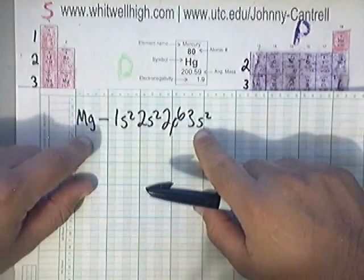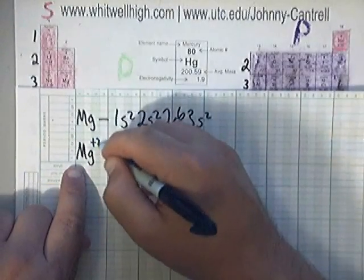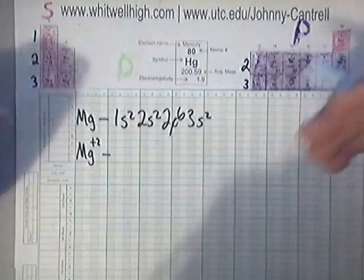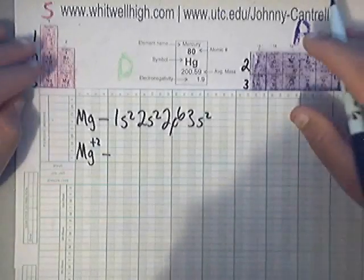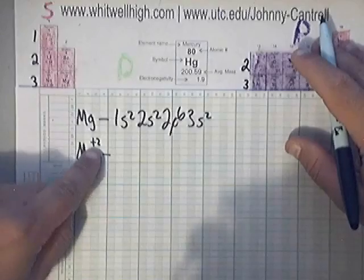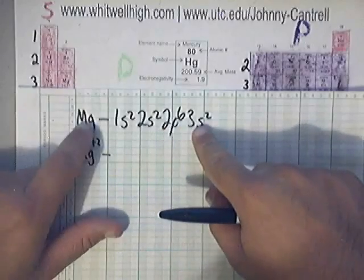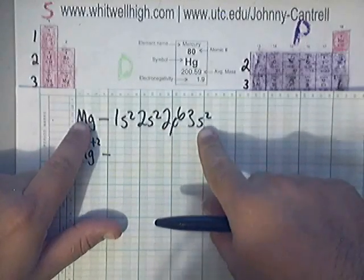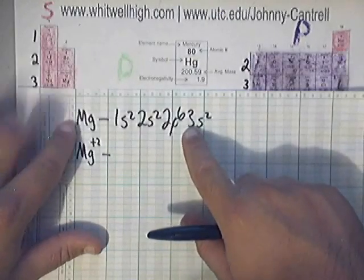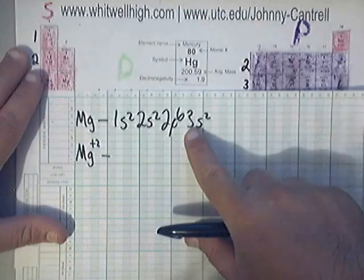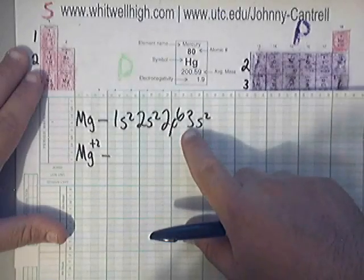Now Mg as an ion is Mg plus 2. Remember, metals basically want to get rid of their valence electrons, so they freely give them up. Now basically this thing loses two electrons. Looking at this, the neutral version, where is it going to get rid of two valence electrons? It's always going to throw away electrons from the outermost orbital. Basically look for the largest principal quantum number, this 3.